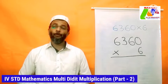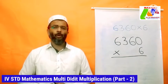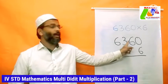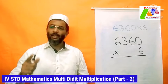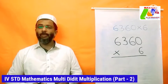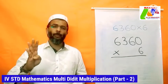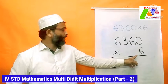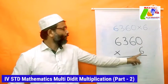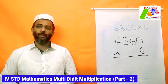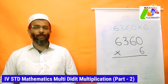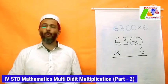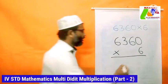Now we are ready to learn the procedure for multiplying. In our problem we only have one digit on the bottom, and we are going to multiply it by each of the digits in the top number. Since the top number has four digits, our problem will have four small multiplication steps. For the first step, we multiply the bottom digit by the digit in the ones place of the top number: 6 × 0 = 0.